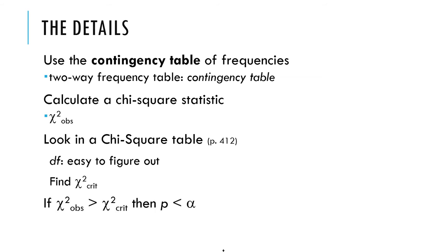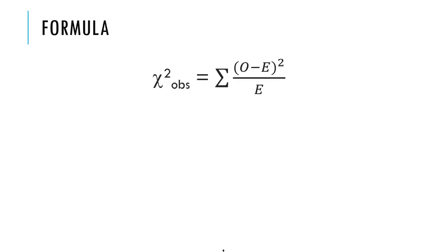If our chi-square observed is greater than the chi-square critical that we calculated from our data, then we know that p is less than alpha and we reject the null hypothesis. This is very similar to other hypothesis-testing situations we've done so far.